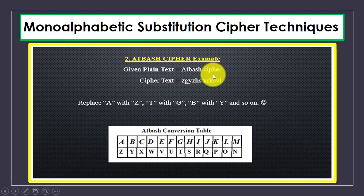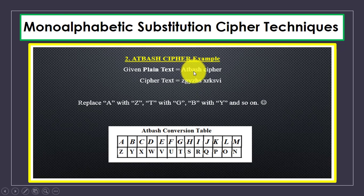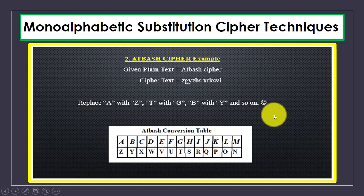Let's see the Atbash cipher with an example. For the plaintext 'atbash cipher': A is replaced with the corresponding reversed letter from the table, T is replaced with G, B with Y, and continuing — H is replaced with S, C with X, P with K. That's how the Atbash cipher works.